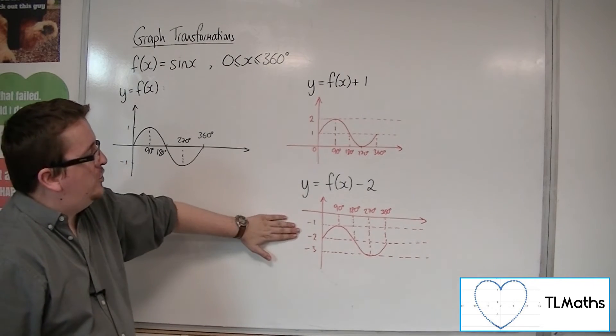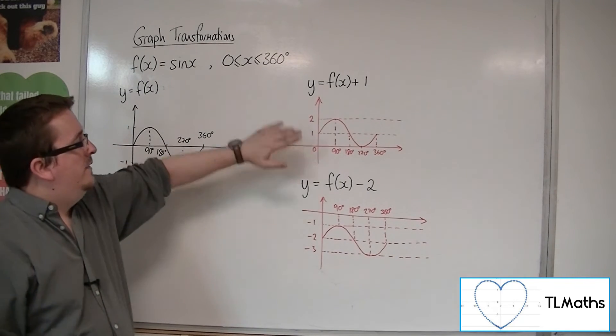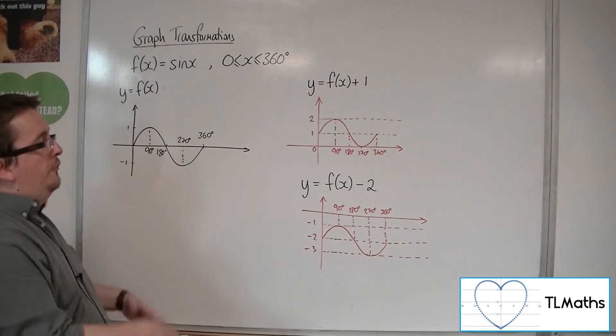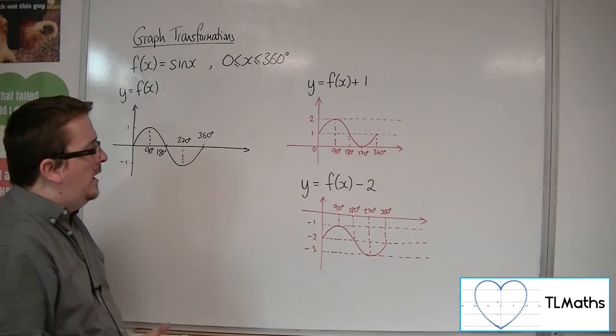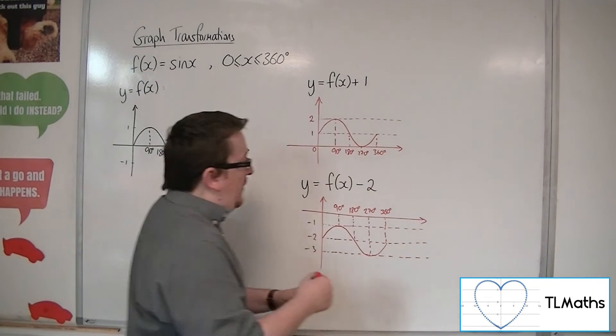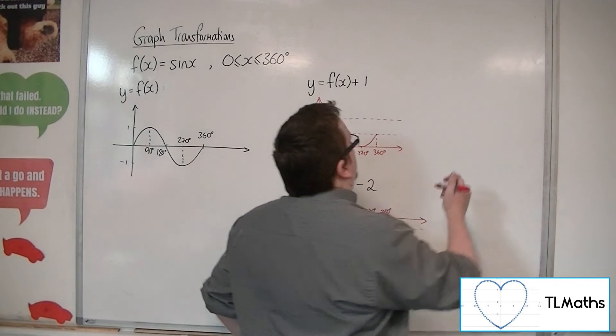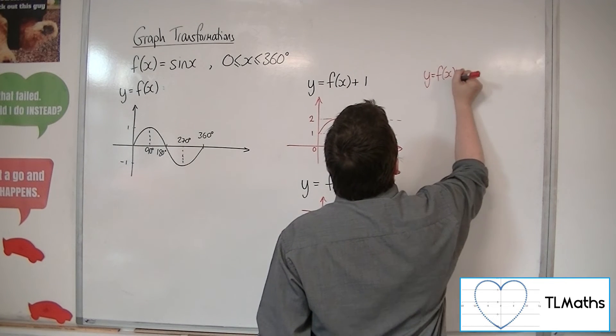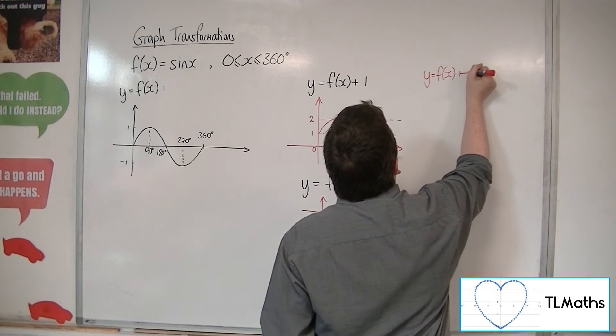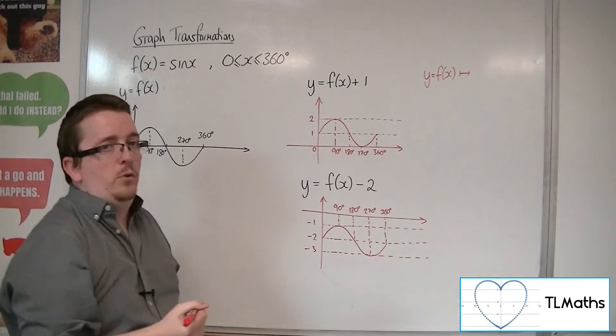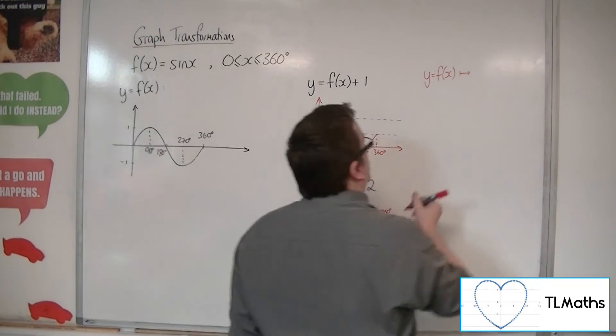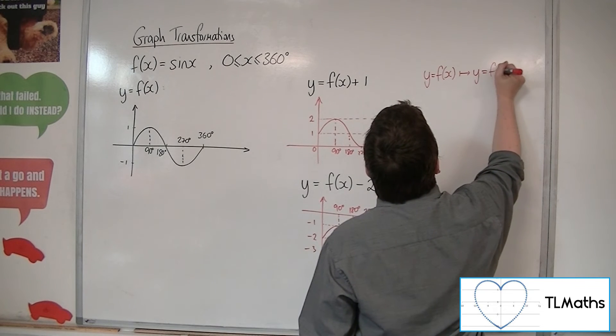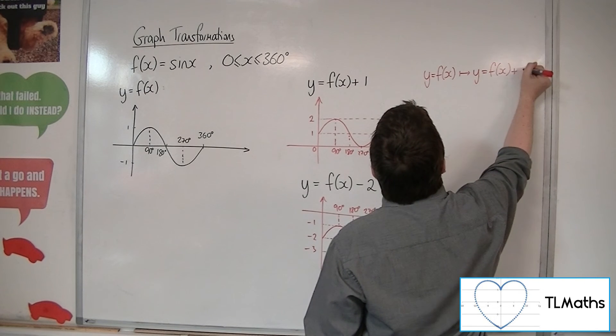So this is a sketch of the curve f of x minus 2. That's a sketch of the curve f of x plus 1. So from this, we can say that if y equals f of x is transformed, I'm going to use this arrow symbol to represent transformed or mapped to, y is equal to f of x plus a.